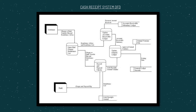The cash receipt clerk sends copy 2 of the remittance list together with the remittance advice to the accounts receivable clerk. The accounts receivable clerk updates the computerized debtor subsidiary ledger and prints an account summary, which is sent to the general ledger executive. The general ledger executive reconciles the journal voucher from the cash receipt clerk and the account summary from the accounts receivable clerk before updating the general ledger accounts. Finally, the executive keeps the documents in the reference file.